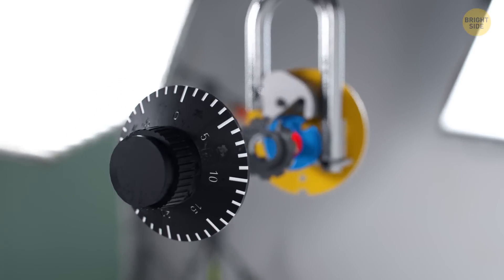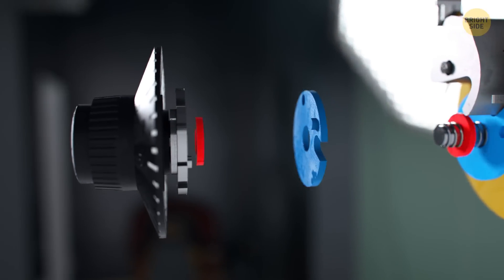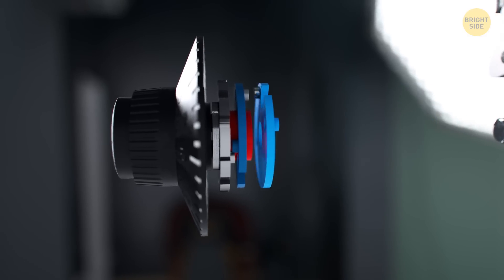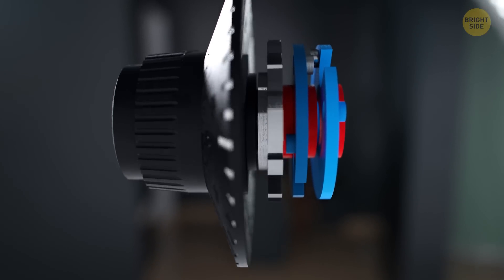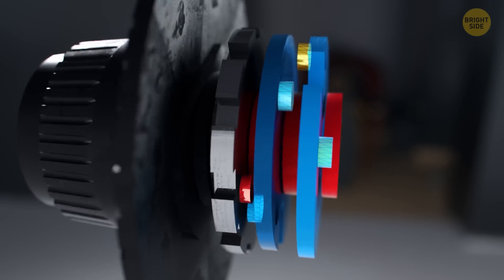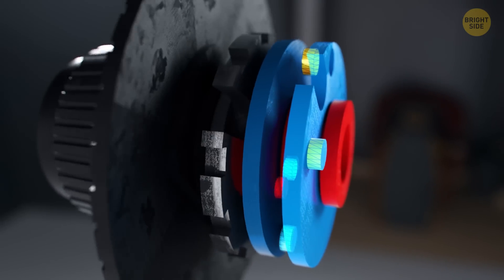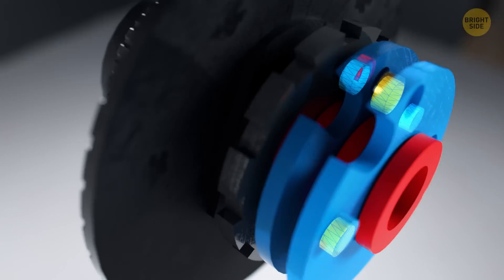Let's take a closer look at the mechanism. You start rotating the first disc. As it makes a full circle, the disc hooks a tooth on the second disc, and they start turning together. Then the second disc makes a full circle and engages the tooth of the third disc. And now all three discs rotate together.